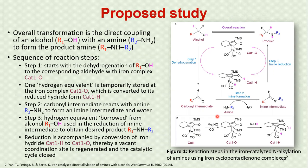Alcohol is the alkylating agent and water is the only by-product. For my PhD, I will be looking at different earth-abundant metals. However, for this presentation, I will focus only on the borrowing hydrogen reaction for iron, which is shown in Figure 1. The overall reaction is the transformation of an alcohol to the product amine. Since this is a catalytic process, there are three steps in which the transformation to the product occurs.